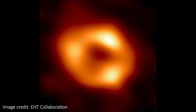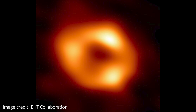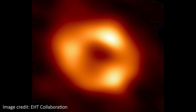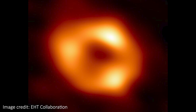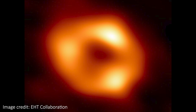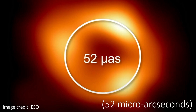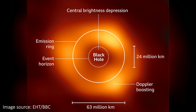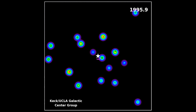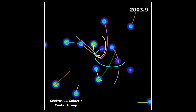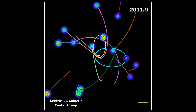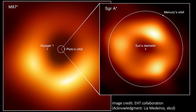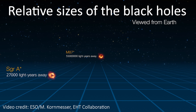This image, beyond being beautiful and a huge achievement, also teaches us quite a lot about Sag A-star. Since the size of the event horizon's shadow is related to the mass of the black hole, we can measure the size we see here and confirm the mass at 4 million solar masses — we'd previously gotten this from tracking how fast stars orbit the black hole. The event horizon of Sag A-star is now known to be roughly the size of the orbit of Mercury, while M87's black hole is bigger than our entire solar system.